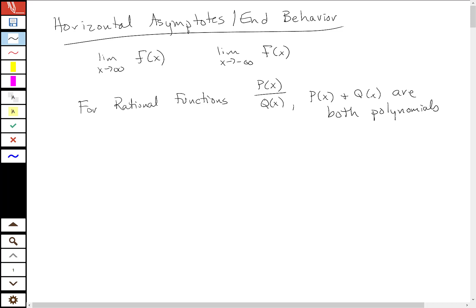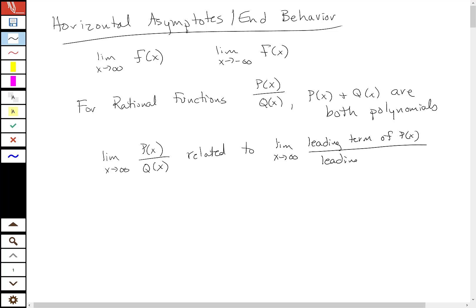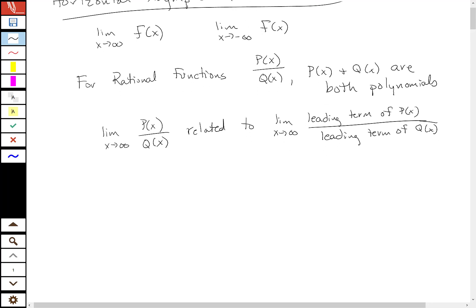Through the analysis we do, I want to show you three main cases that happen. The limit as x goes to infinity of p(x) over q(x) — because of what happens for polynomials — I want you to see how that plays out through this analysis.